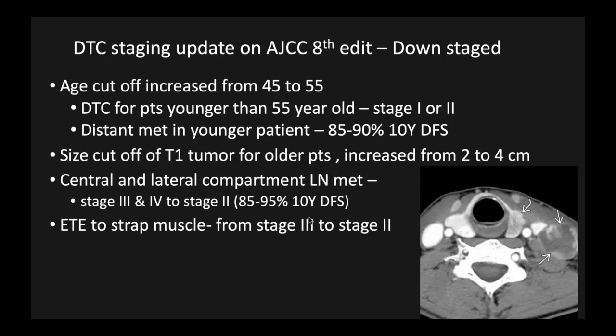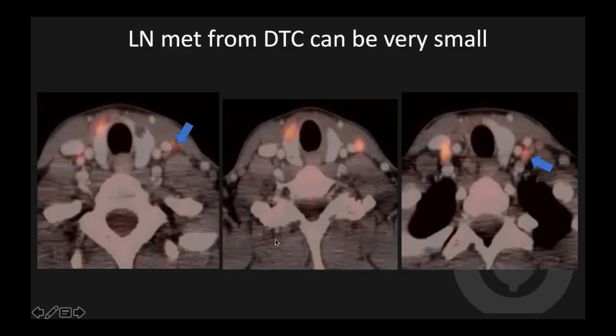There are minor changes in differentiated thyroid cancer staging in the AJCC 8th edition. To summarize, everything is downstaged. The age cutoff increased from 45 to 55, so patients younger than 55 are all stage 1 or 2, with stage 2 being distant metastasis. The size cutoff for T1 tumor increased from 2 cm to 4 cm. Most importantly, lateral and central compartment lymph node metastasis, previously stage 4, is now stage 2. Extrathyroidal extension to the strap muscle is also called stage 2 instead of stage 3.